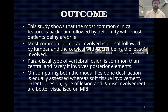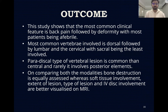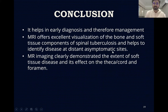Outcomes and conclusion: This study shows the most common clinical feature is back pain, followed by deformity, with most patients being afebrile. The most common vertebrae involved are dorsal, followed by lumbar and cervical, with sacral being least involved. The paradiscal type of vertebral lesion is more common than central, and rarely involves posterior elements. On comparing both modalities, bone destruction is equally assessed; however, soft tissue involvement, extent of lesion, type of lesion, and disc involvement are better visualized on MRI. MRI offers excellent visualization of bone and soft tissue components, helps identify disease at distant asymptomatic sites, and clearly demonstrates the extent of soft tissue disease affecting the thecal sac, cord, or foramen.